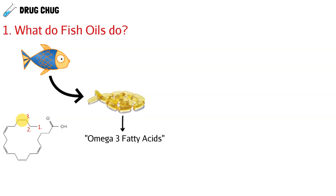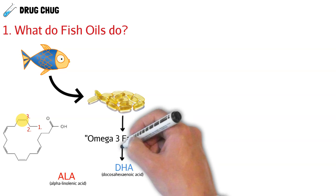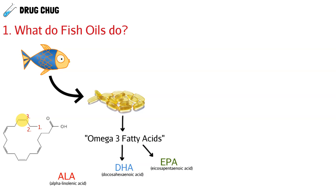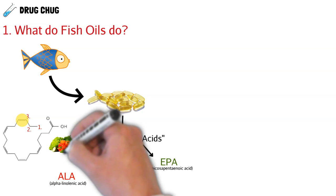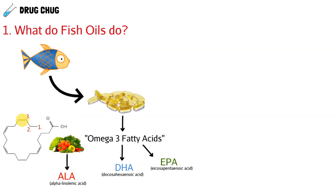We're going to talk about three omega fatty acids. First we have ALA, then we have DHA and EPA. From fish oils we get DHA and EPA — these are the omega-3 fatty acids we extract from fish. ALA is another fatty acid that comes from vegetables and nuts, so it would be a choice for our vegetarian patient population.